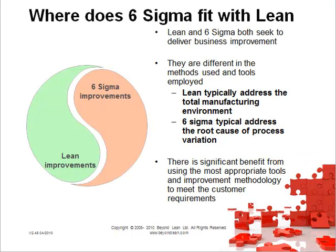Where does Six Sigma fit with Lean, and which is better? You would use whichever one fits the improvement you're looking to make at the time. Lean and Six Sigma both seek to deliver business improvements — Lean through the elimination of waste, Six Sigma through the reduction of variation. The difference lies in the methods and tools employed. Lean typically addresses the total manufacturing environment; Six Sigma typically addresses the root cause of process variation. Why sacrifice speed for accuracy or accuracy for speed when you can have both?